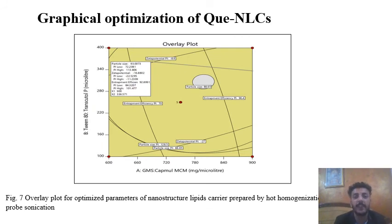This is the graphical optimization of quercetin NLCs. On the basis of CCD, we got some values: particle size low limit is 72 and high limit is 133. For zeta potential, low limit is -16 and high limit is -22. For entrapment efficiency, high limit is 92 and low limit is 84.32.